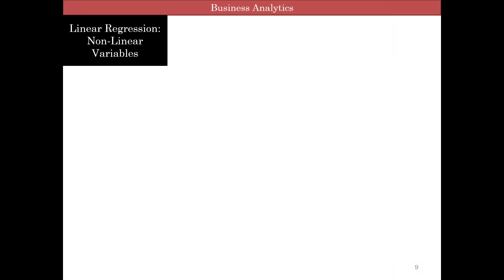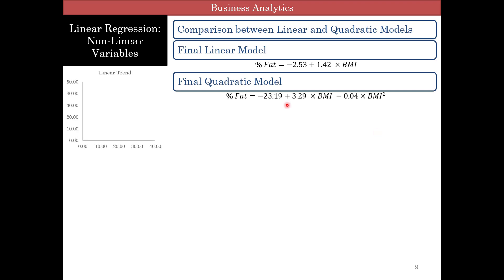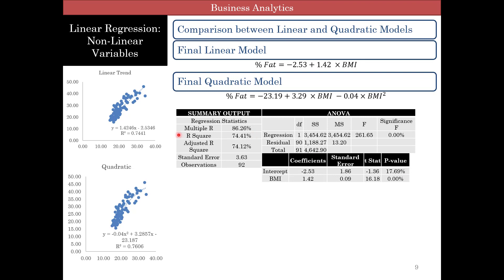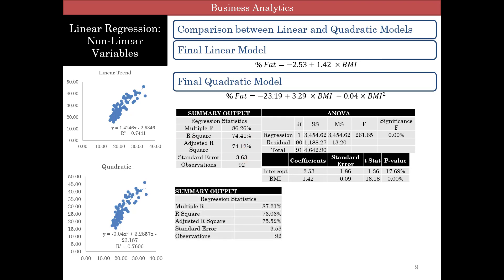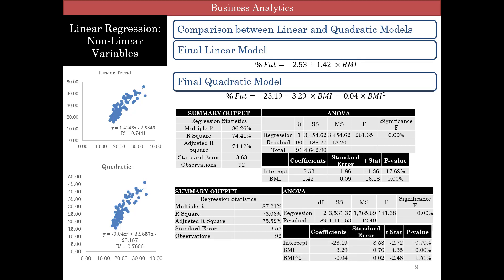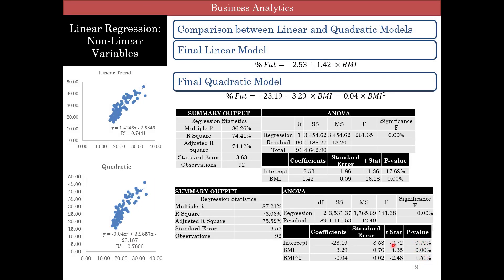We compare the two models. We can clearly see that the adjusted R-squared and the standard error — which gives absolute values — show the quadratic model is a better fit, explaining more. The quadratic model explains about 75.52% adjusted R-squared, whereas the linear model's R-squared is only 74%. And if you look at the p-values, all of them are pretty significant — so this model should work.